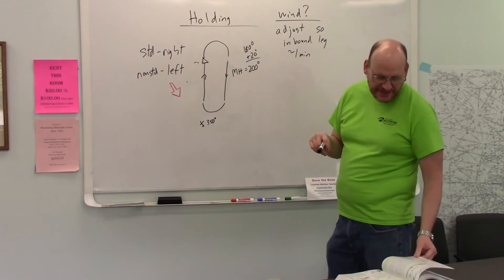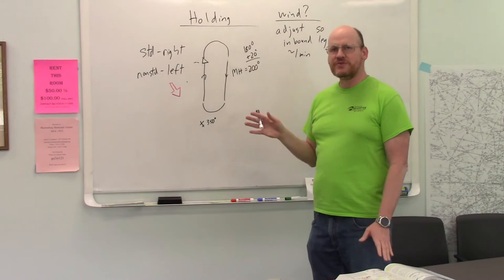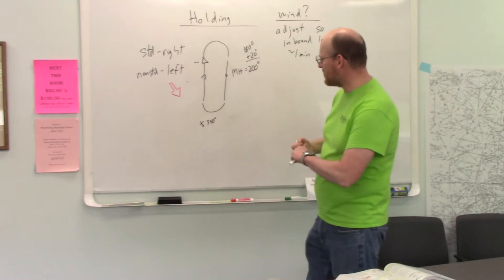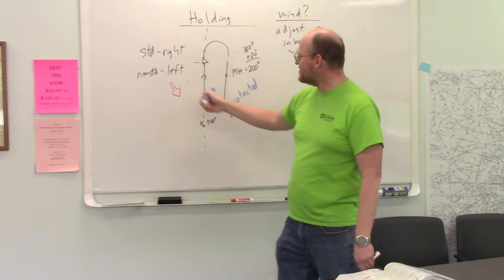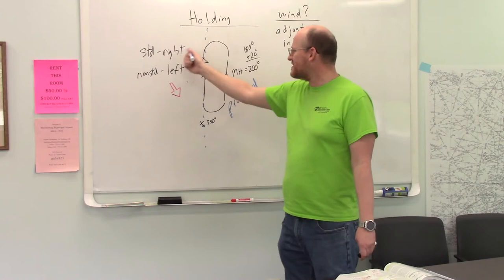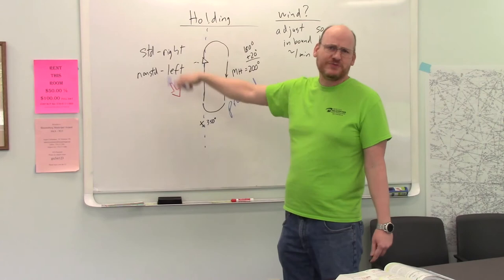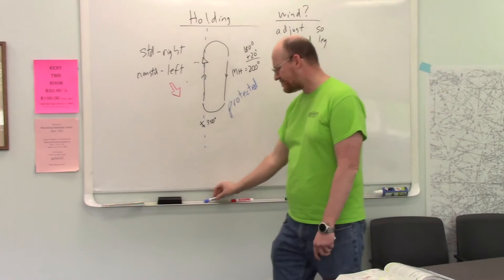OK, some other things that you should know about holding patterns. If there is a holding pattern that's part of an approach, right turns, here's my fix. This side of this line here is called the protected side. So this is the protected side. So if I want to enter the approach, which we're going to talk about here in a little bit, I want to make sure I don't spend a lot of time over here, preferably no time over here, because this is not the protected side. There could be obstacles over here, who knows what's over here. So I want to try to stay on the protected side of the approach.